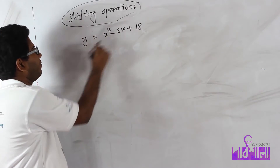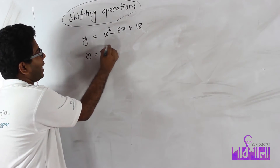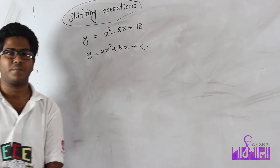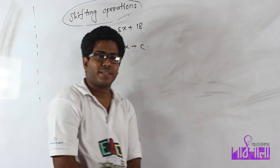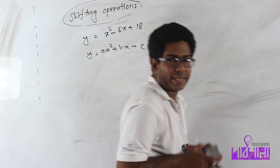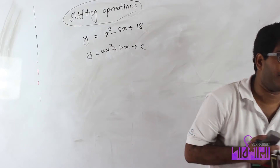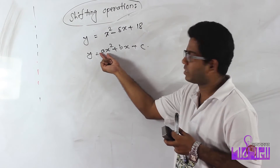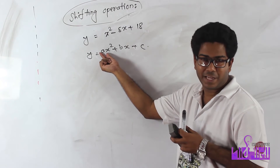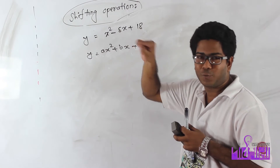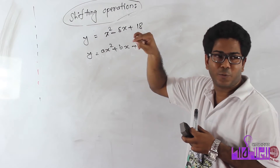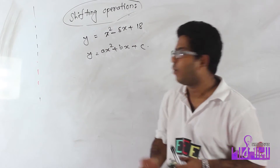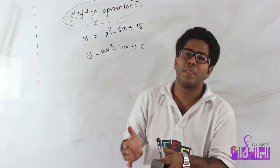If you see this function, it is a x squared plus b x plus c. When we do this function's graph, we will see a positive and negative. We will see minus b by 2a. We will see a negative result.